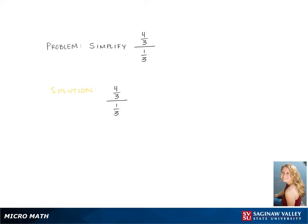Here we are working on simplifying the complex fraction of 4 thirds divided by 1 third. We're going to start by rewriting the problem and then apply our division rule for complex fractions. This means we take the fraction in the numerator and multiply it by the reciprocal of the fraction in the denominator.